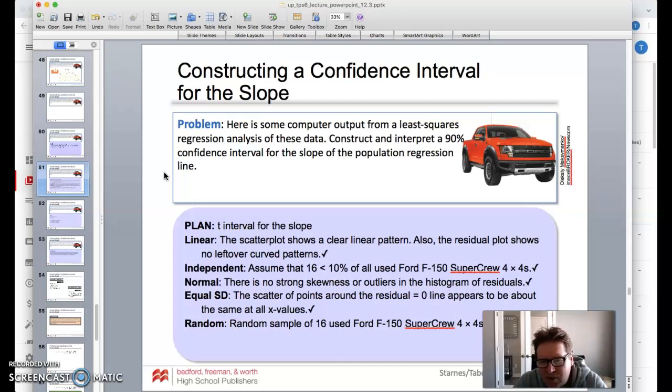Normal—there's no strong skewness. Looking at the previous screen, there is no strong skewness or outliers in the histogram of residuals. The scatter points around the residual appears to be about the same, and it is random. We did do a random sample of 16 used F-150s. So we're all good in our plan phase.